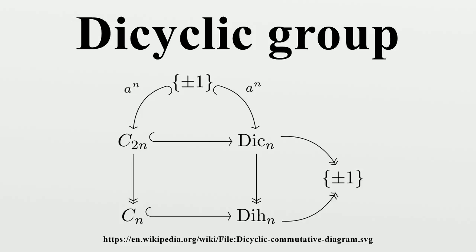It follows that DICₙ has order 4n. When n equals 2, the dicyclic group is isomorphic to the quaternion group Q. More generally, when n is a power of 2, the dicyclic group is isomorphic to the generalized quaternion group.